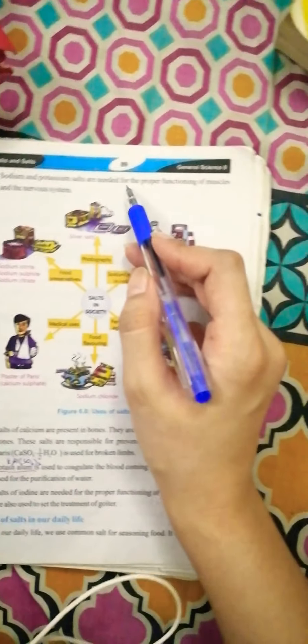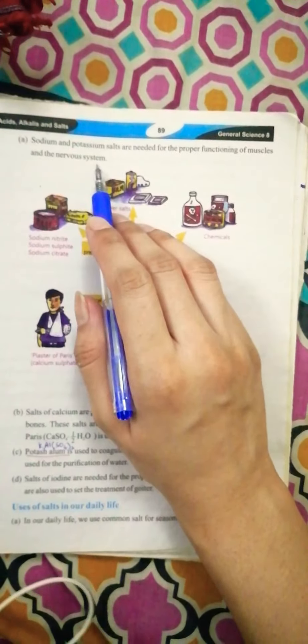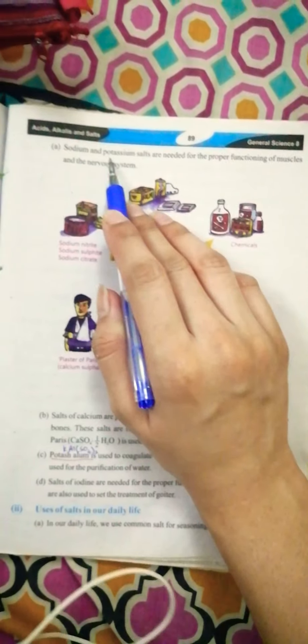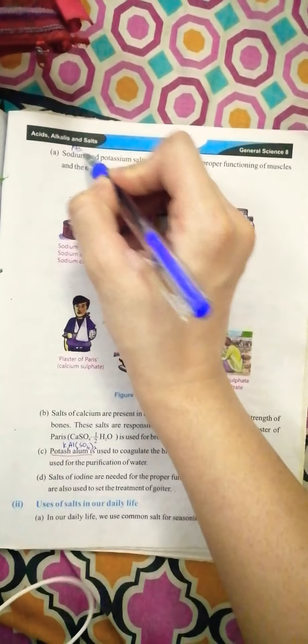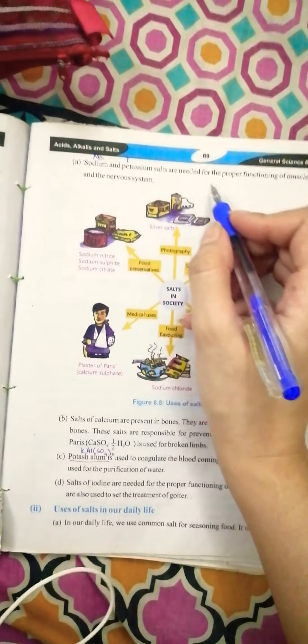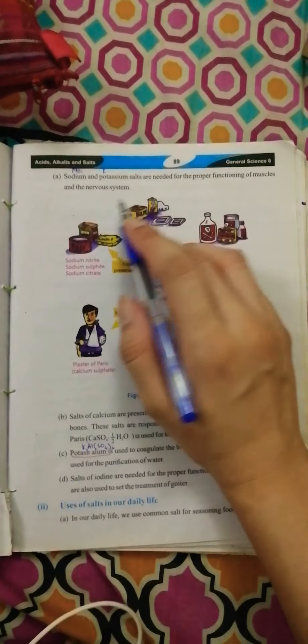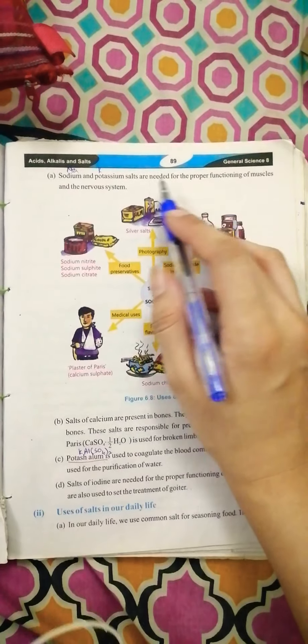Sodium and potassium salts are needed for proper functioning of muscles and nervous system. In your body, sodium and potassium Na and K salts are needed for proper functioning of muscles and nervous system.